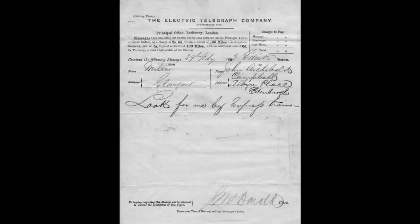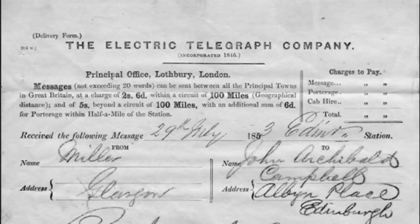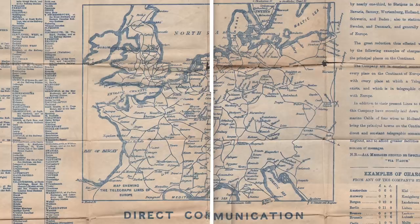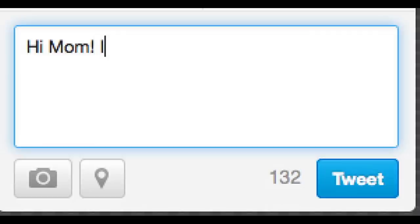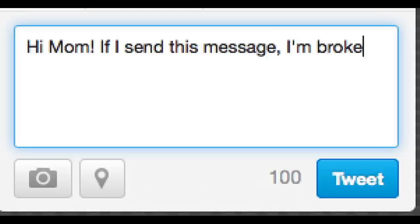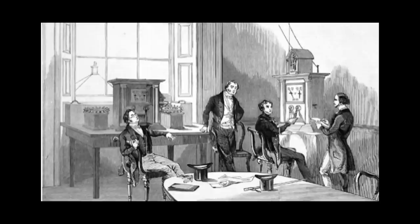And initially, the company billed customers based on single messages, which could hold up to 20 words, which is about the length of a tweet. And by 1848, the cost of sending a single message from London to Edinburgh was 16 shillings. And this was around one week's salary for, say, a shop owner at the time. So this technology was initially out of the hands of common people.